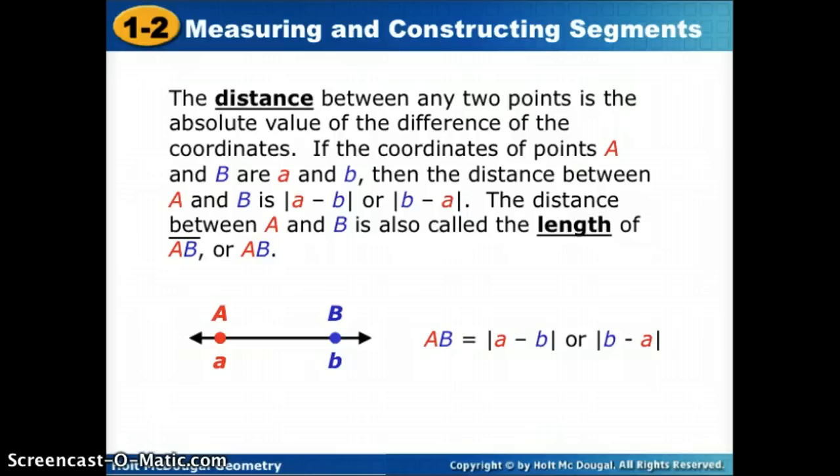Now that we've given a segment distance, we can talk about how to find those distances. On a line, we have two points, A and B. We can decide what the distance between A and B are using where those points are on the line. If A is at 2 and point B is located at 6, to find the distance from A to B, we could either say 2 minus 6, which is negative 4, or 6 minus 2, which is 4, and we take the absolute value.